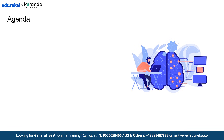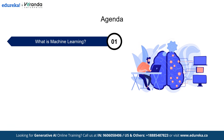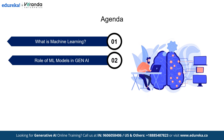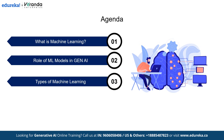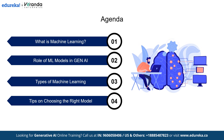Let's outline what we will cover in this video. First, we will cover what machine learning is, discussing how it differs from traditional programming and why it's so powerful. Next, we will explore the role of ML models in generative AI. Then, we will dive into the types of machine learning models. Finally, we will wrap up on how to choose the right model, sharing key tips to help you select the best one based on your data, problem type, and real-world constraints.